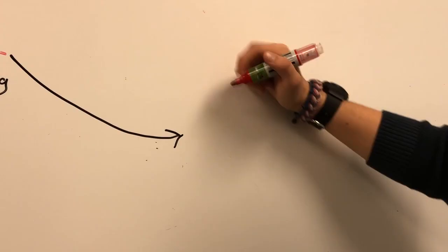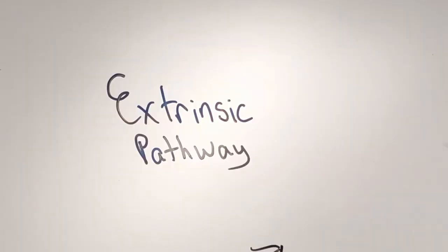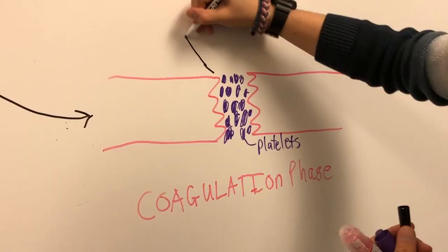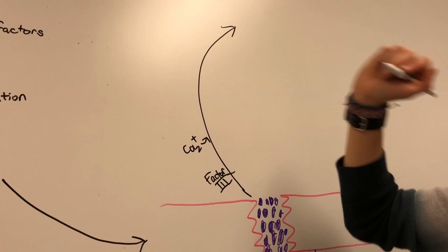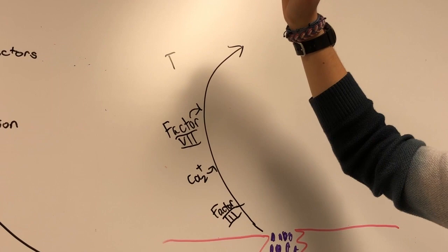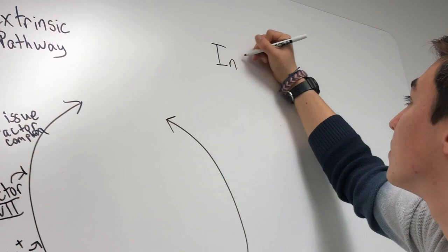In the final phase of hemostasis, known as the coagulation phase, there are three pathways that feed into each other. The extrinsic pathway begins outside of the bloodstream in the vessel wall, where endothelial cells release factor 3, also known as thromboplastin. Factor 3 combines with calcium and factor 7 to form the tissue factor complex, an activator for factor 10.